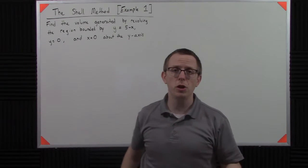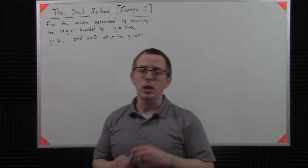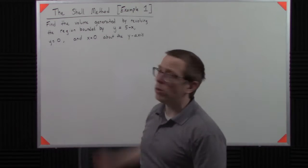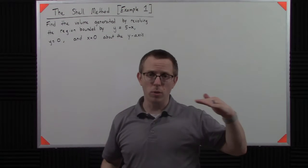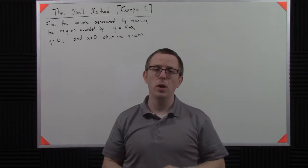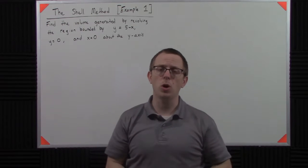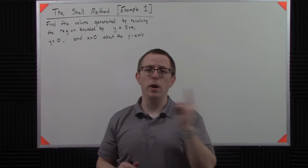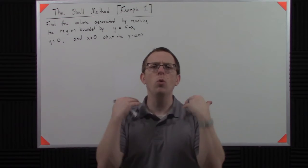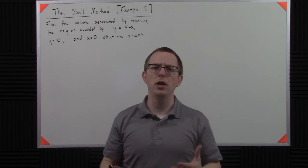All right, let's do an example using the shell method. So what we have is a region that's defined by y equals 5 minus x, y equals 0, and x equals 0. And so that's going to be some sort of triangle. We're going to draw it out and we want to revolve that around the y-axis and say, okay, what kind of volume happens when I use this?